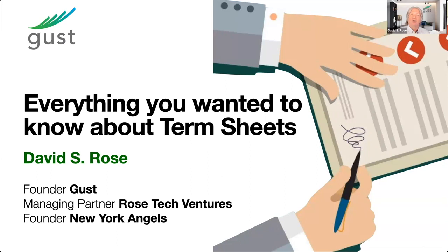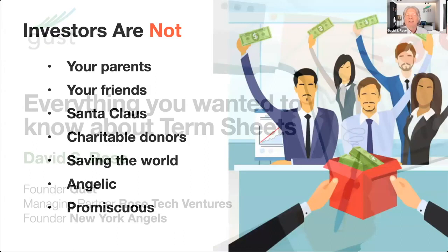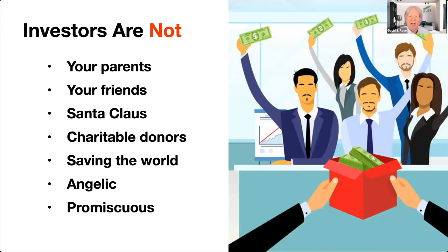Before we discuss term sheets, we have to go into the basics and discuss who these investors are, what they are, and why you're discussing term sheets with them anyway. The first thing to understand is what investors are not. Investors are not your parents — they're not here because it's part of life and they're going to support you and help you. They are also not your friends. Parents and friends can be investors, but investors are not parents and friends. Your friends do things because they like you or want to help. That's not the motivation behind angel investors or venture capitalists. They're also not Santa Claus. No matter what you read on TV series or blogs, investors don't just pop in and drop money on people.